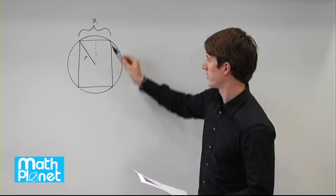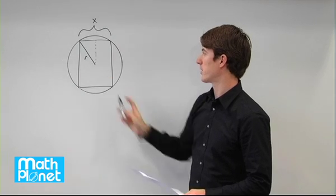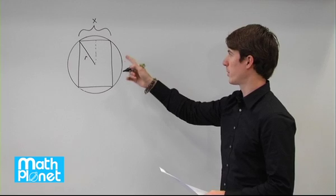This dimension here is the same as this dimension here, x over 2. So we can just use Pythagoras' Theorem to find this r here. If we have a squared plus b squared equals c squared, we can apply that to this.